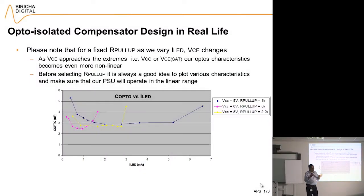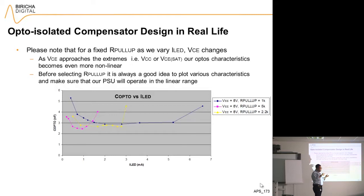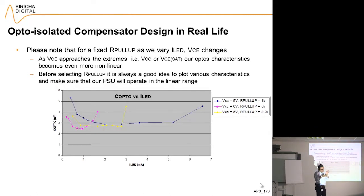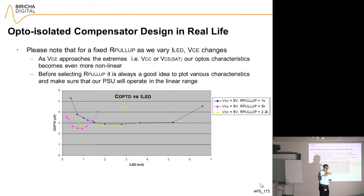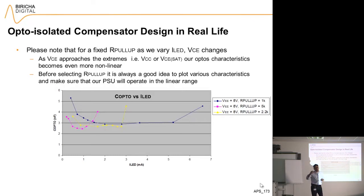We are about to start designing our first opto-isolated flyback converter. We have talked about the TL431, we have talked about how an opto works, but we discussed the bandwidth of the opto and showed that it had a pole dependent on the value of the pull-up resistor. Before starting to design it, we ought to take into account and make some measurements of what happens with different values of the pull-up resistor, because depending on which opto you're using, this could have a very dramatic effect on the bandwidth of the opto.